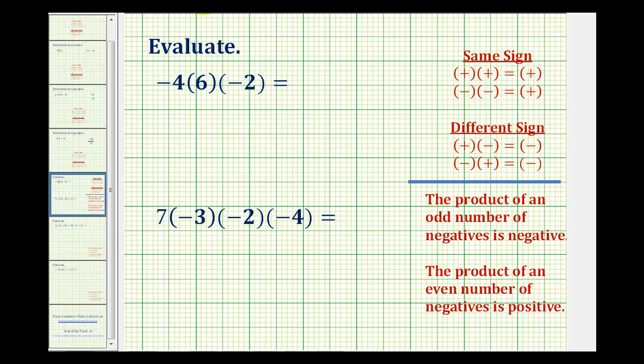When multiplying three or more integers, we have two options. We can just use the rules for multiplying two integers and multiply two integers at a time, or we can use a shortcut to determine the sign of the product.